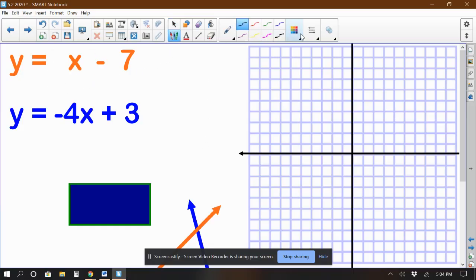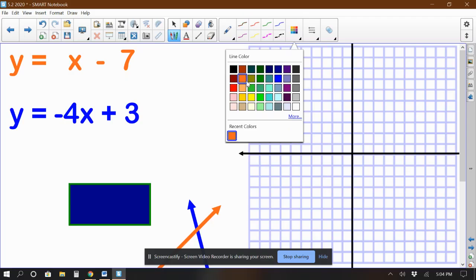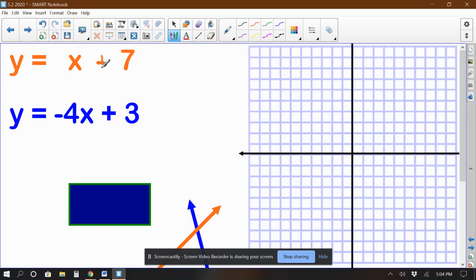So as you can see with our first equation, let's use orange to match that color. The equation's already in y equals mx plus b format. We call that slope intercept format.